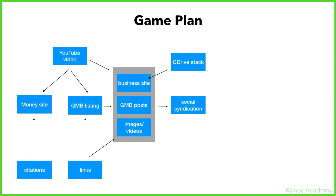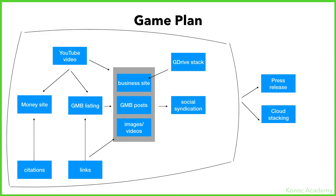The idea is you link to both your GMB listing and all three of those properties. You send citations to your money site. You'll also have YouTube videos with keyword-rich descriptions, titles, and more pointing to your money site, your GMB listing, and all three properties. Then we'll also have Google Drive stacks, and all of this is syndicated to your social media. Then you take all of this and do some press releases and cloud stacking.